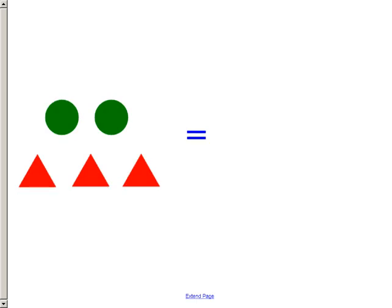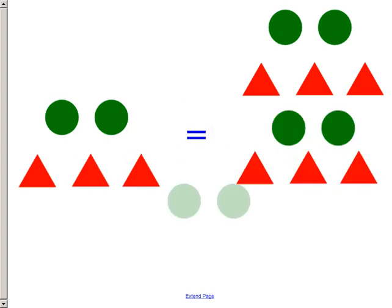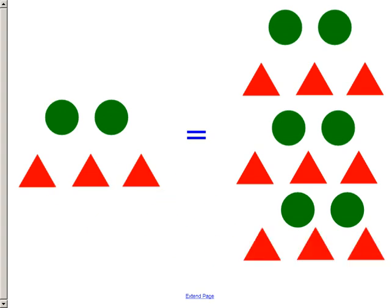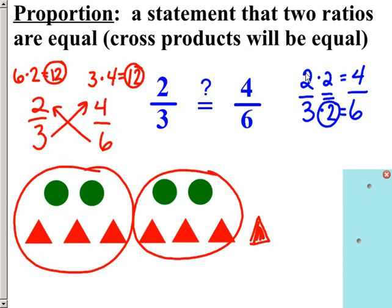I can come up with lots of different ratios that are equal to 2 to 3. A ratio of 4 to 6 equals 2 to 3. A ratio of 6 to 9 would work. A ratio of 8 to 12 would equal 2 to 3. I can also figure it out by saying a ratio of 2 to 3 equals 4 to 6 because three times two is six, and two times two is four — I multiply both parts by the same factor.